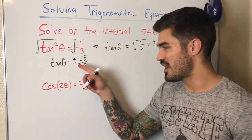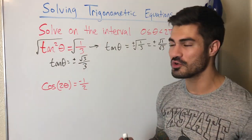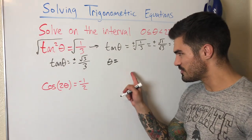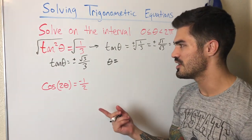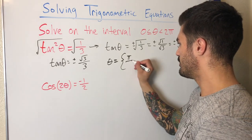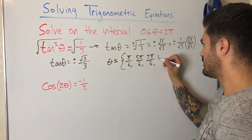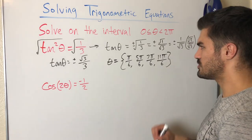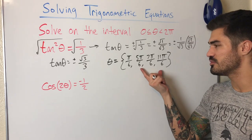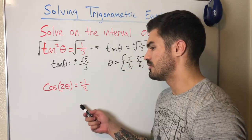Since tangent theta equals plus or minus root three over three, we need angles with a reference angle of pi over six, one from each quadrant, giving four solutions: theta equals pi over six, five pi over six, seven pi over six, and eleven pi over six. Pi over six and seven pi over six give positive root three over three; five pi over six and eleven pi over six give the negative value.